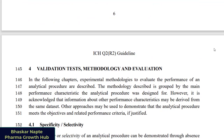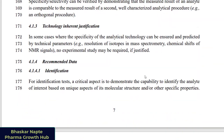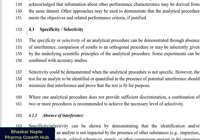We are on page number seven of the draft guideline and you can see parameter 4.1, which is specificity. The first change you must have noticed is in defining the term itself. If you refer to the current guideline, that is the Q2 R1 version, you will find the term 'specificity.' ICH has now made an important change — rather than saying specificity, ICH is mentioning this parameter as 'specificity or selectivity.' If you refer to the ISO definitions for selectivity and specificity, you will understand why ICH made this change.